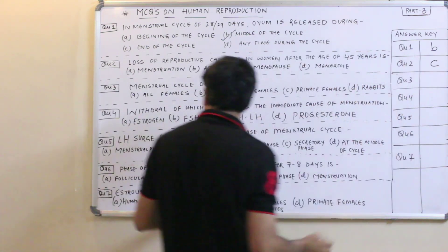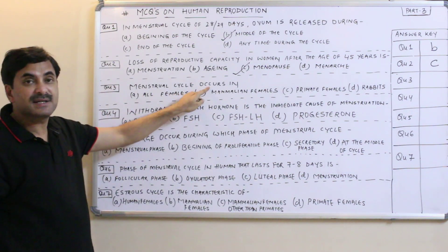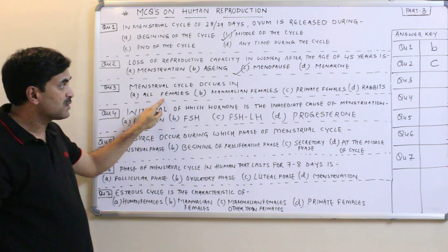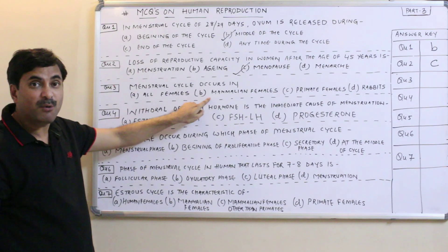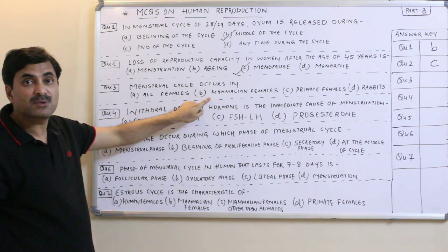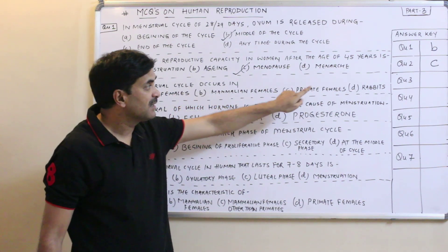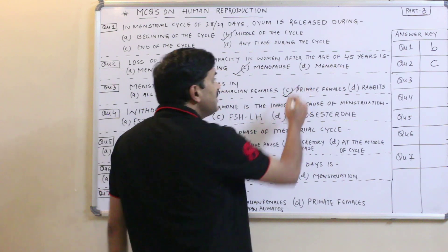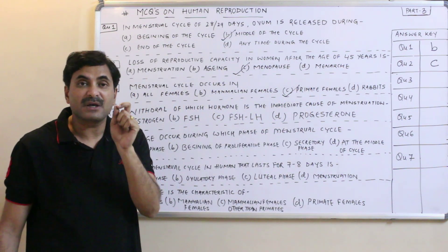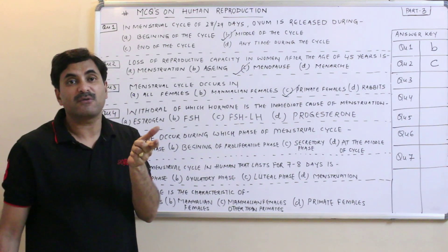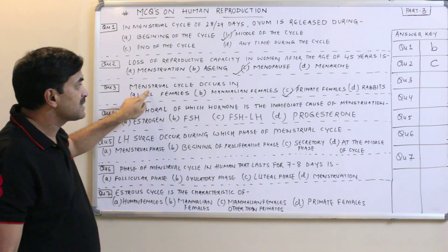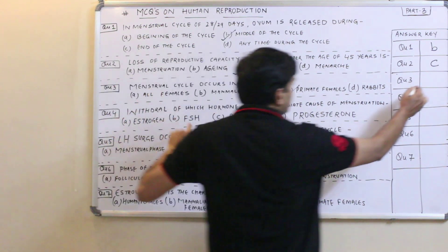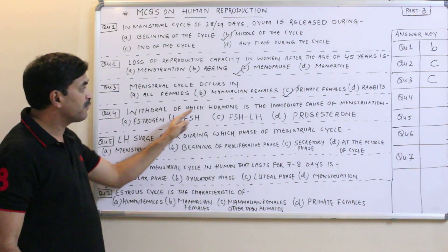Question number three: does the menstrual cycle occur in all females? No, it is not correct. It occurs in mammalian females, but specifically in primate females of mammals. Primates are an order of mammals. So the menstrual cycle occurs in primate females, and the answer is C.